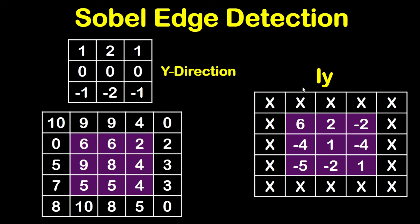After getting Ix, we will get Iy using the Sobel kernel in the y direction with the same steps. We put the center of the kernel on the first required pixel, which is 6. So 1 will be on 10, 2 on 9, 1 on 9, 0 on 0, 0 on 6, 0 on 6, negative 1 on 5, negative 2 on 9, and negative 1 on 8. Multiplying and adding: 10 by 1, plus 9 by 2, plus 9 by 1, plus 0 by 0, plus 0 by 6, plus 6 by 0, plus 5 by negative 1, plus 9 by negative 2, plus 8 by negative 1 results in 6.